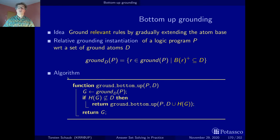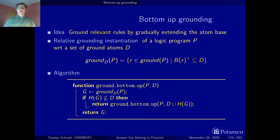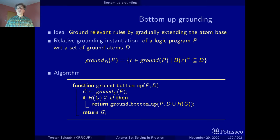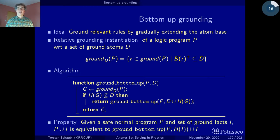We loop until we cannot produce any new heads anymore — either because the ground instantiation doesn't change, or because there's redundancy. When we reach a fixed point on the atom base — when it can no longer be extended — we take the ground instantiation of the program with respect to this last atom base, return it, and pop all the recursive calls. The good news is this program is equivalent to our original program P together with the problem instance.